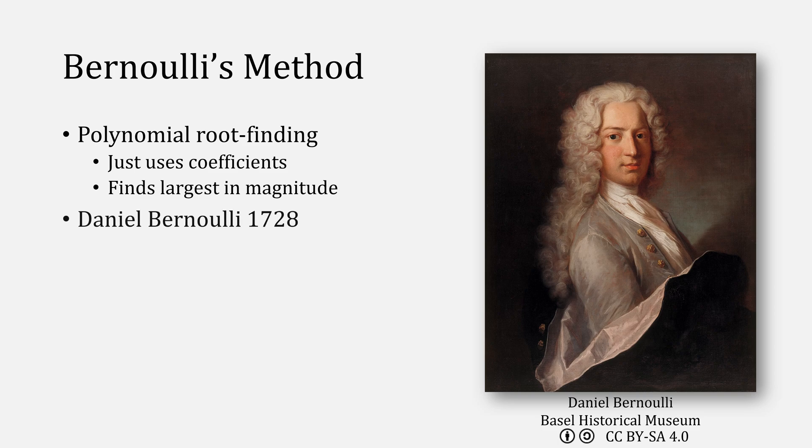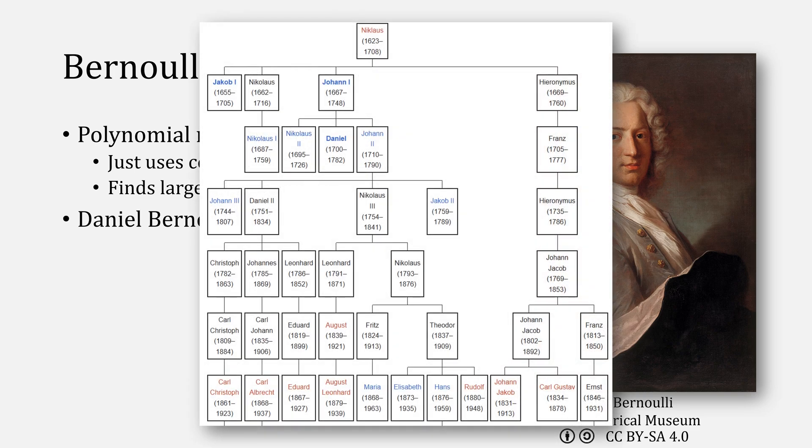It's named for Daniel Bernoulli. If you're wondering where he falls in the family tree, he is the son of Johann I.